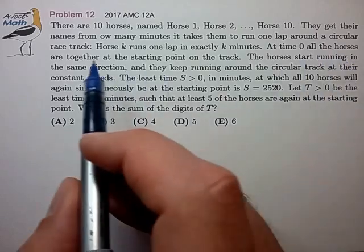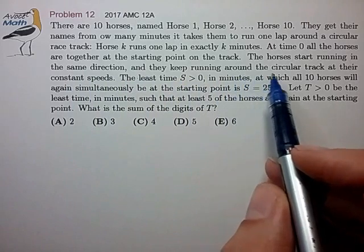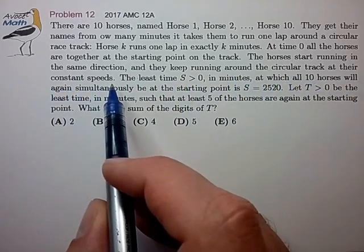At time zero, all the horses are at the starting point. The horses start running in the same direction, and they keep running around the circular track at constant speeds.